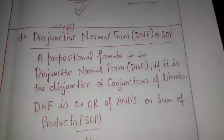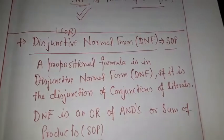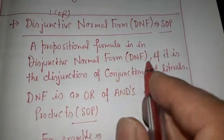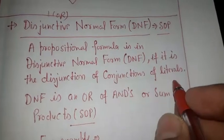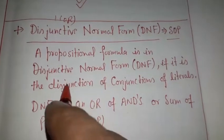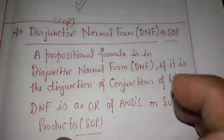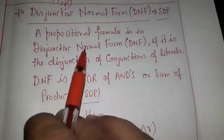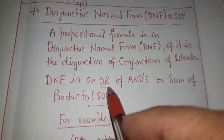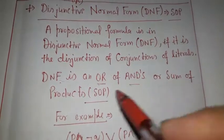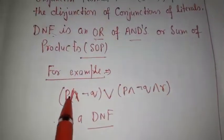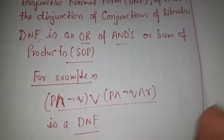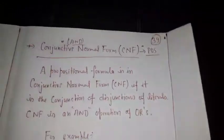Similarly, the disjunctive normal form (DNF) is equivalent to sum of products. A propositional formula is in DNF if it is the disjunction of conjunctions of literals — conjunctive terms ka disjunction. DNF is an OR of AND-operated variables, the sum of products form. For example, (p∧¬q)∨(p∧¬q∧r) is a DNF.